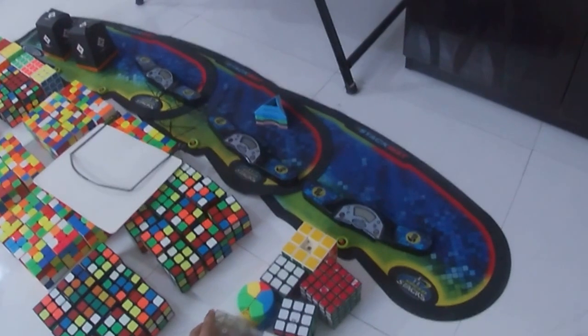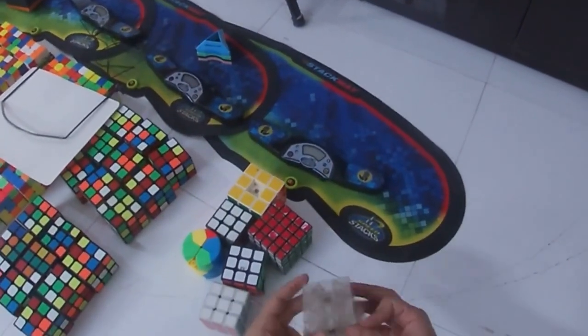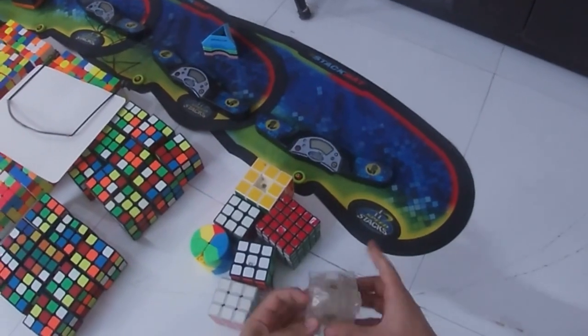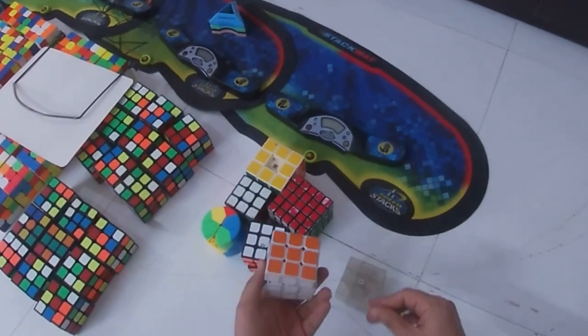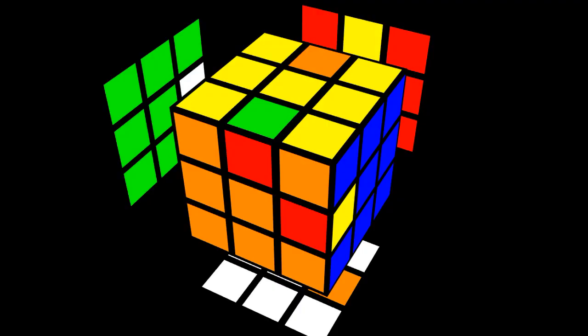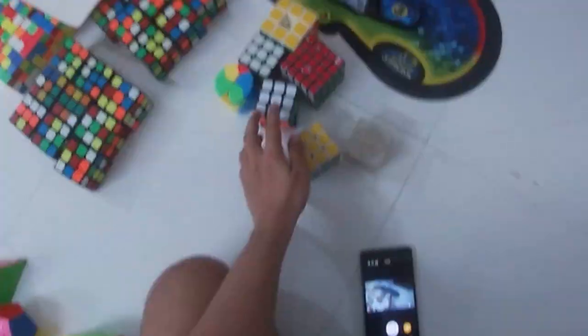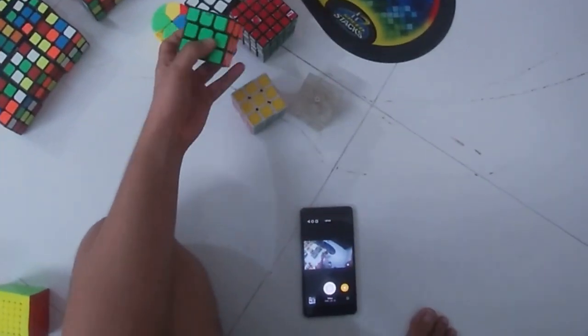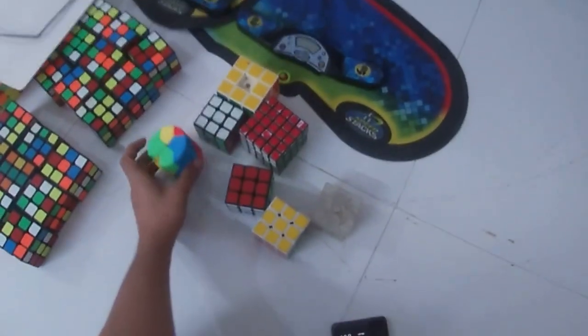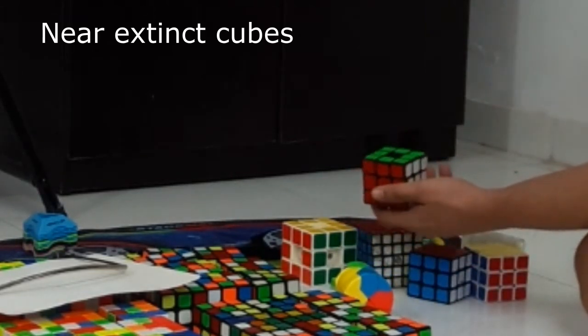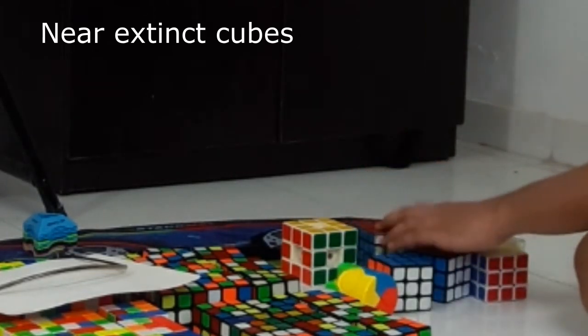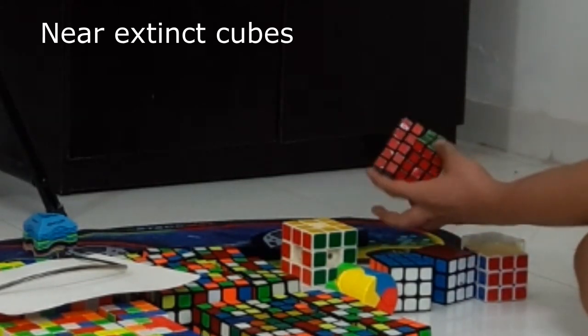This is the collector item Weilong cube. Here is a DaYan Zhanchi cube which is having terrible springs inside. Here is a GuanLong which is bandaged so this is a bandage cube. Here is a Redi Barrel, here is another GuanLong but it's also disabled.